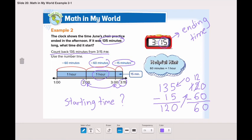Now, are we done? No. We still have another 60 minutes. 60 minus 60 is 0. We've reached 0. We finished all the minutes that has passed. From 2 o'clock, it will be 1 o'clock. What time was the starting time of the practice? It was 1 o'clock.